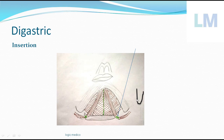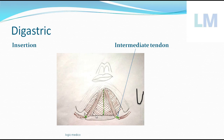There are two origins. The inner surface of the mastoid process — called the digastric notch or mastoid notch — is the origin for the posterior belly. The digastric fossa on the inner surface of the chin is the origin for the anterior belly. The posterior belly fibers run downwards and forwards, and the anterior belly fibers run backwards and downwards, to meet at the intermediate tendon. That is the insertion. The intermediate tendon is anchored to the hyoid bone by the stylohyoid muscle, which splits to hold this intermediate tendon.